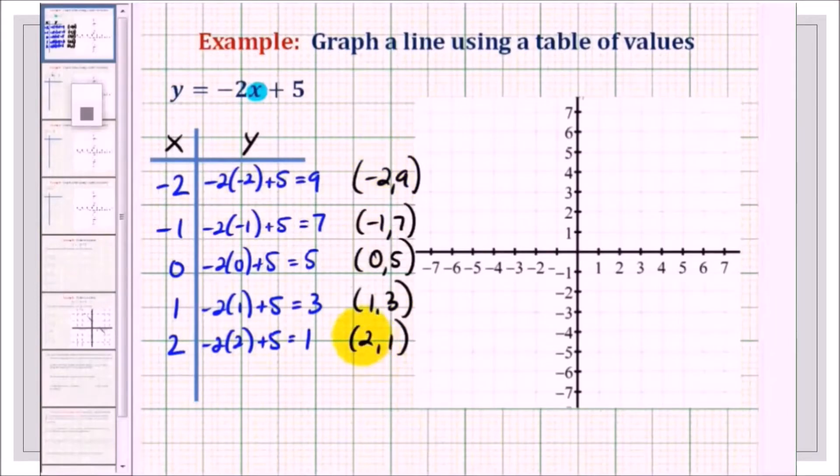Now let's plot these points on our coordinate grid. Negative 2, 9. So from the origin, go left negative 2 and up 9. It's outside the grid. But remember, you can always extend your grid. Negative 1, 7. Go to the left negative 1 and up 7. 0, 5. It's on the y axis.